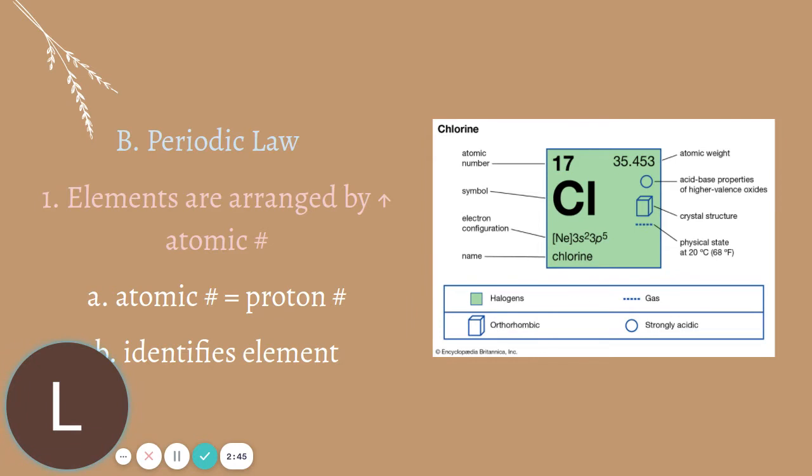Moseley is the other scientist that really contributed to periodic law. He came through and assigned all of the elements numbers, which are their atomic number right here. You can see it on chlorine is 17. And the atomic number happens to be the number of protons, and it's the identity of the element. So if you were to say element 17, everybody would know you meant chlorine because it's the only element with 17 protons. If it has 16, it's a different element. If it has 18, it's a different element. So the number of protons identifies the element, not the mass, because this is an average. The atomic number is the only thing that identifies the element.